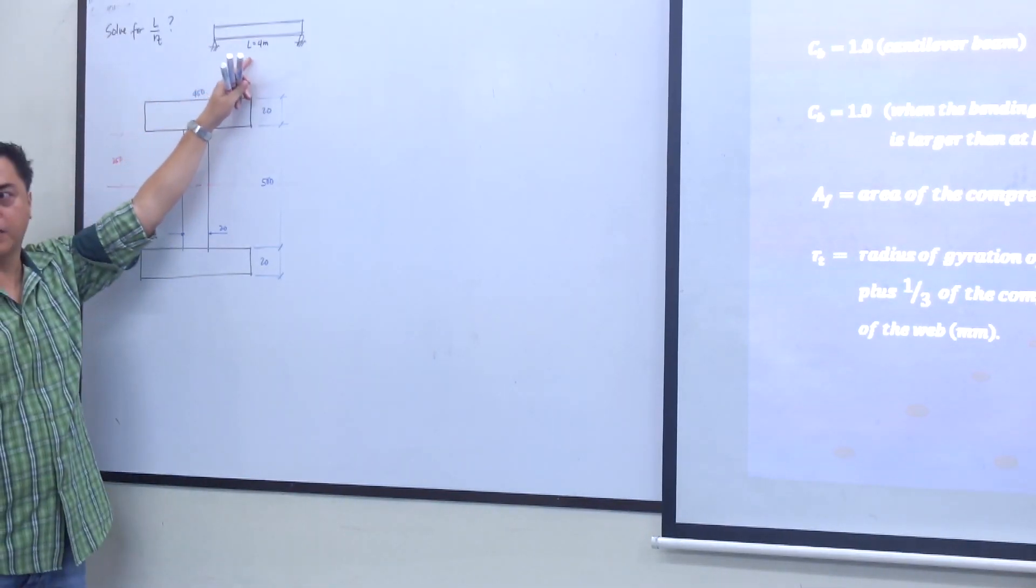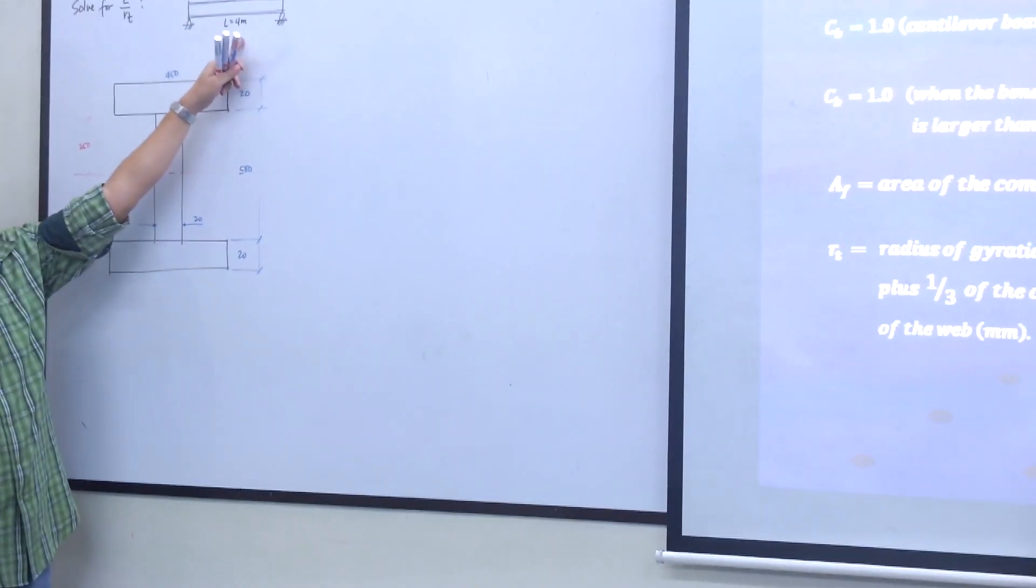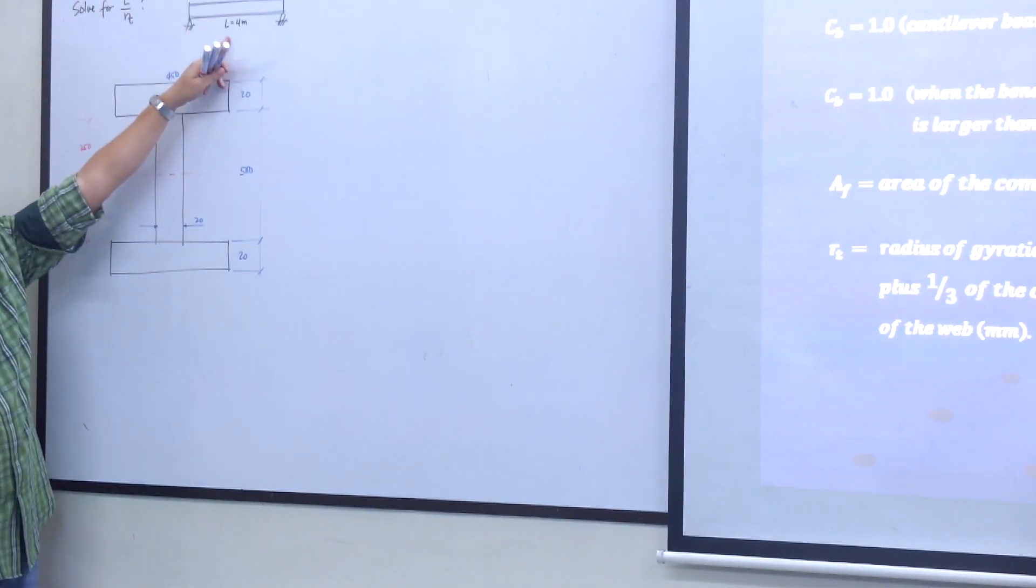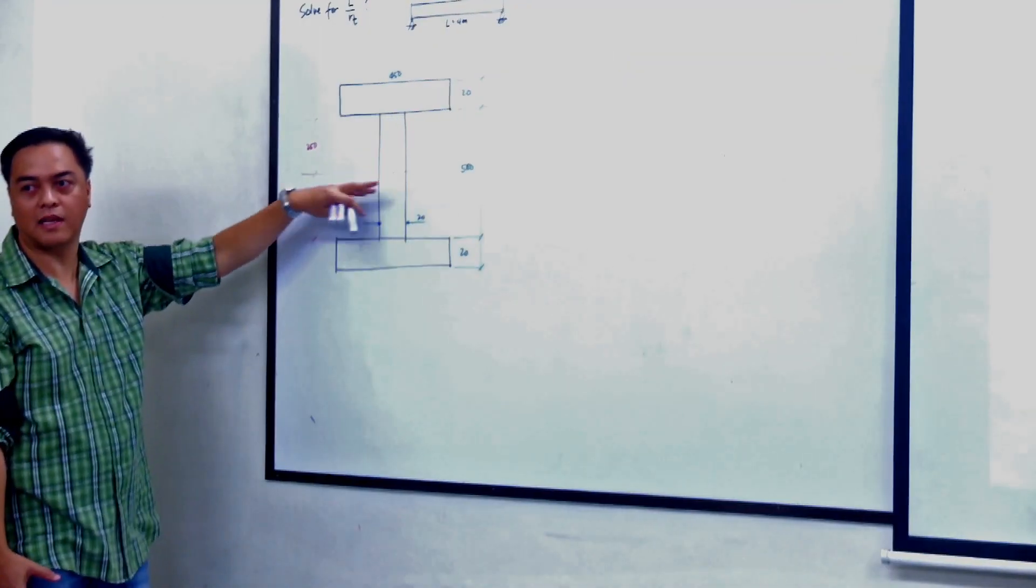We're dealing with a simply supported beam with a span of 4 meters. The cross section of this simple beam is a built-up section like this.